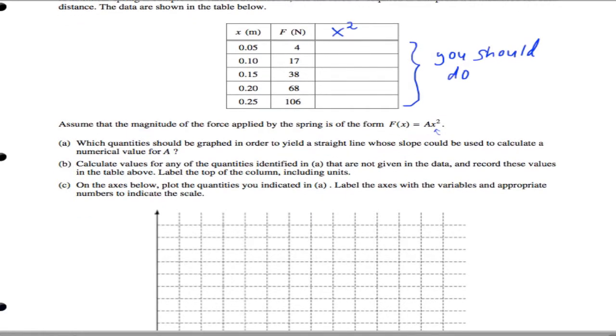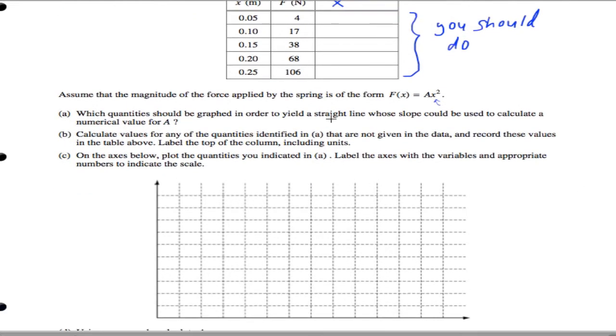And then it says here, it says calculate values for any label of the quantities, and so on. So here's what we say. For part A, the answer is graph F versus x squared.